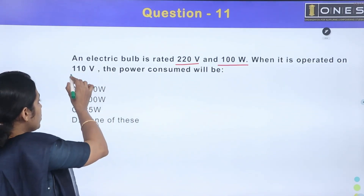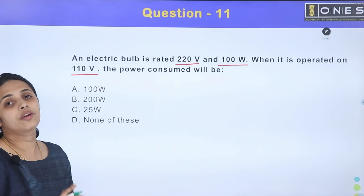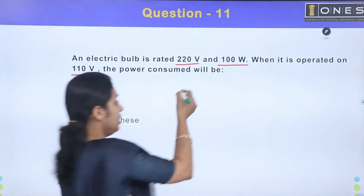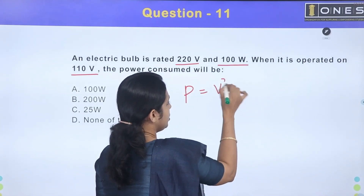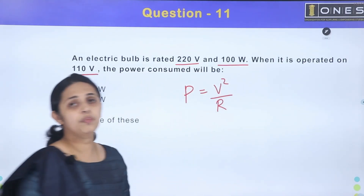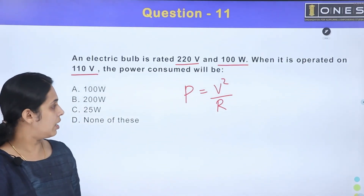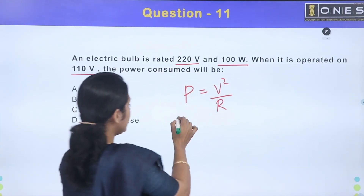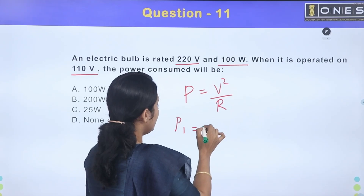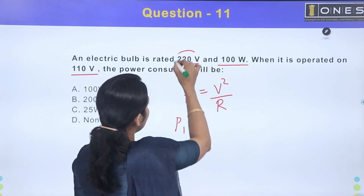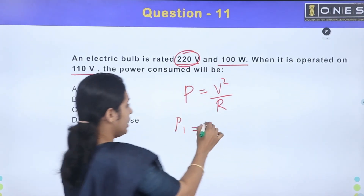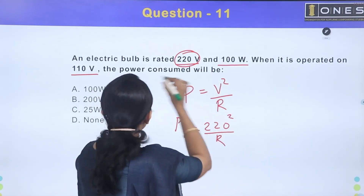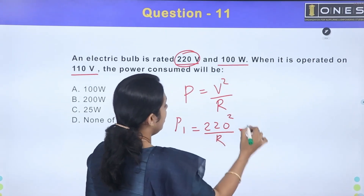I am reducing the voltage. We can see the power consumed. The power consumed is equal to V² divided by R. The power is equal to V² where V is 220V, divided by R. The power is 100W.